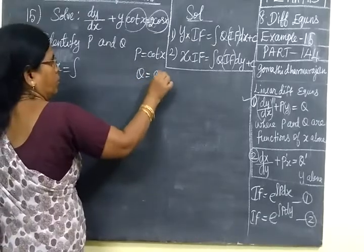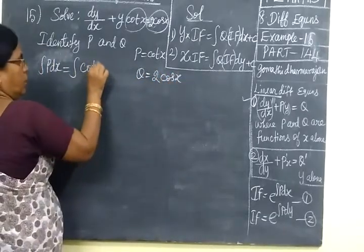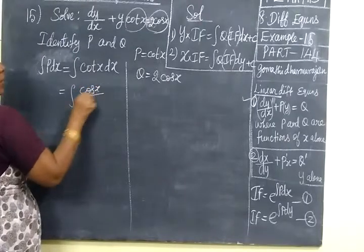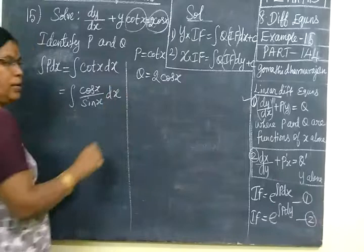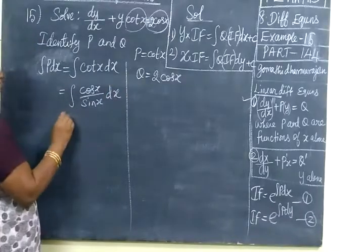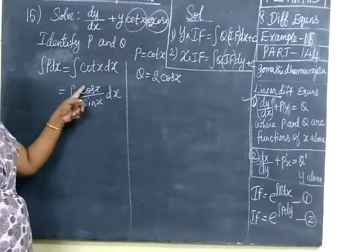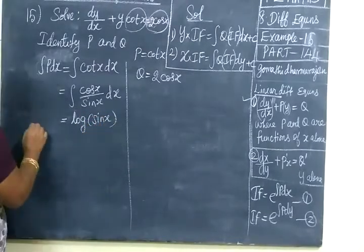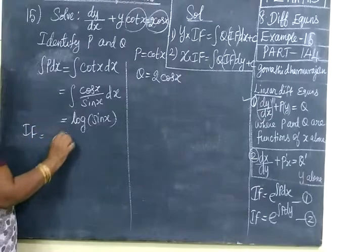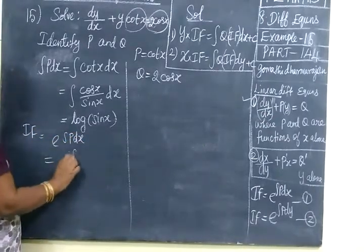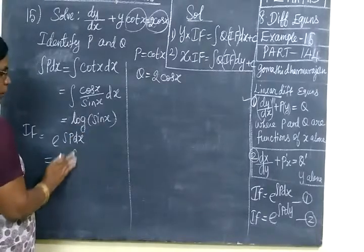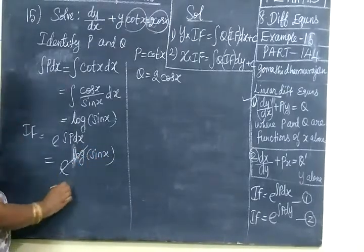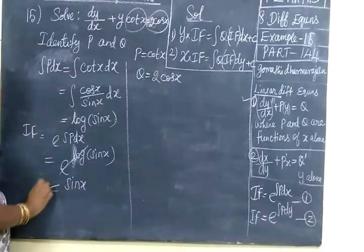Here P = cot(x) and Q = 2cos(x). We write the integral of cot(x) dx. We know cot(x) = cos(x)/sin(x). Since the denominator's differentiation is in the numerator, we can write it in log form: log of sin(x). Now we find the integrating factor e to the power of integral P dx, which is e to the power of log(sin x). The e and log cancel, giving sin(x). So the integrating factor equals sin(x).